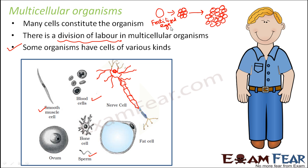Even if you are not able to understand what exactly the fertilized egg is, or what egg and sperm are, we will talk about all that in higher classes when you learn in detail about reproduction. For now, just understand that in multicellular organisms, all these multiple cells actually arise from one single cell.